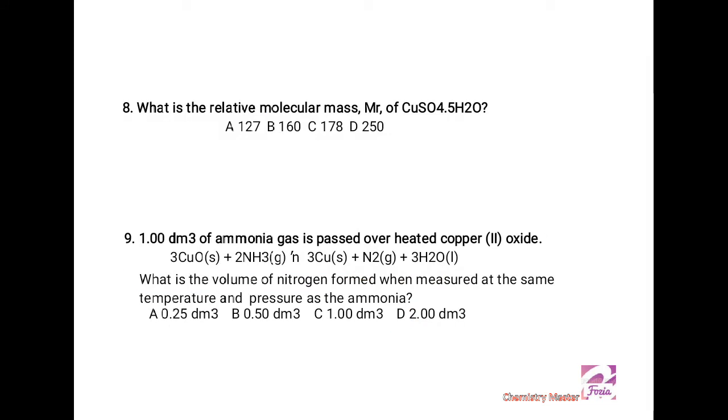Now MCQ number eight: what is the relative molecular mass of copper sulfate 5H2O? Here again a trick is there because this time you are given a salt with water of crystallization. These five molecules of water are included or are part of the crystal lattice, so the mass of these five water molecules will also be added in the Mr of the compound. From the periodic table you can get to know that copper has relative atomic mass 64, sulfur 32, oxygen 16, and hydrogen is 1. It's better if you calculate it yourself.